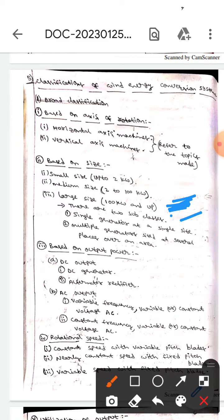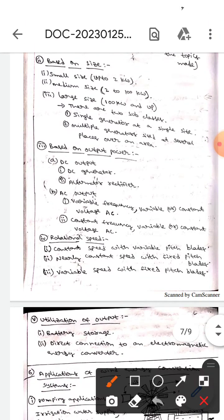There are two subclasses in large size: single generator at a single site, and multiple generators at several places over an area. The next classification is based on output power.